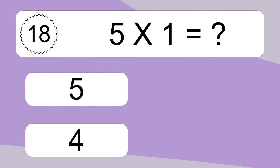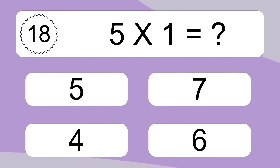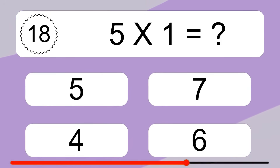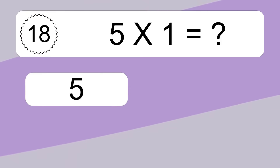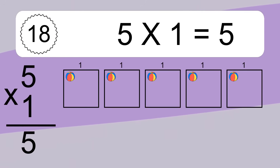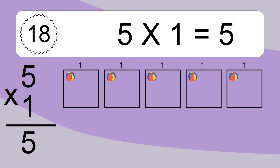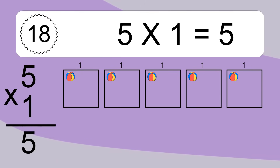5 times 1 equals what? 5 times 1 equals 5. We have 5 boxes, and each box has 1 colorful ball inside. If you count all the balls in all the boxes together, you will have 5 times 1 balls. This equals 5 balls.